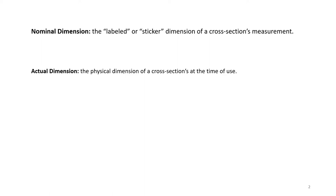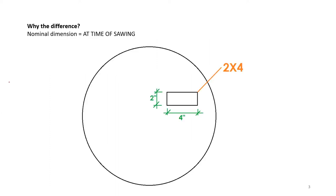Why the difference? One way to think of this is that nominal dimensions can be thought of as the cross section's dimensions immediately at the time of sawing. But we typically don't use lumber immediately out of the sawmill — we dress and season it. The nominal dimension can be thought of as its dimensions at the time of sawing: you saw a two-inch by four-inch cross section out of the tree trunk, and right at the time of sawing its dimensions are approximately two inches by four inches.